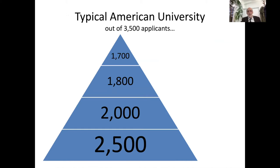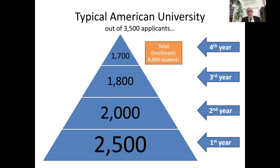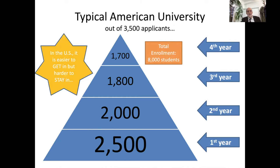A typical American university with 3,500 applications will admit 2,500 of them. It's easier to get in, but that number reduces in second, third, and fourth year. With the same total of 8,000 students, the largest number is in the first and second year. This means an American university is very competitive — you don't have to work so hard to get in, but you do have to work hard to get out and graduate.